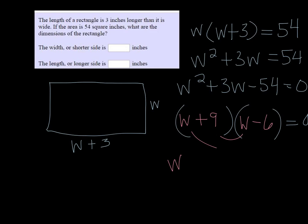So if I solve this, set those equal to 0 and solve, I get w equals negative 9 and w equals 6. A negative width doesn't make sense, so the width must have been 6.